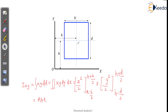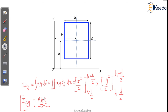Hence the product of inertia of a rectangle whose sides are parallel to the axis equals the CG distance from one axis times the CG distance from the other axis, multiplied by the area. This is the CG distance from the X-axis and this is the CG distance from the Y-axis. So: Ixy = A × (cg from one axis) × (cg from other axis).